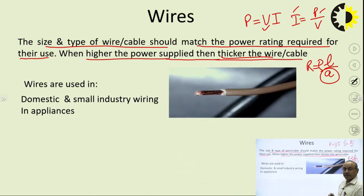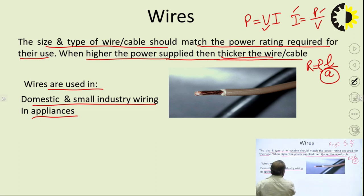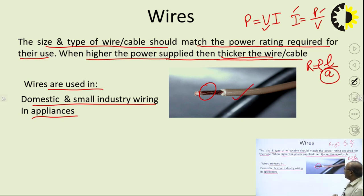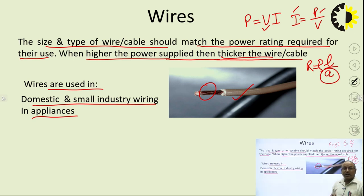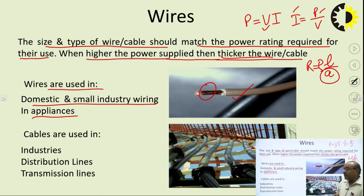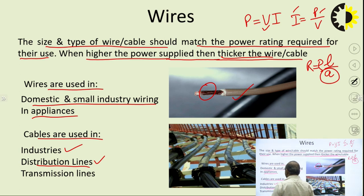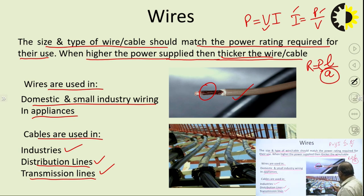That way we have these specifications. Wires can be used in domestic and small industrial wiring and in appliances. As shown in the diagram, these are wires with insulation put over them. On the previous slide we saw the various types of insulations, which can be put over the wire depending upon the requirement. In cables, they are used in industries, distribution lines distributing power to consumers, and transmission lines supplying power from one location to another.